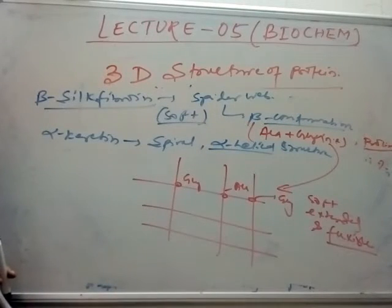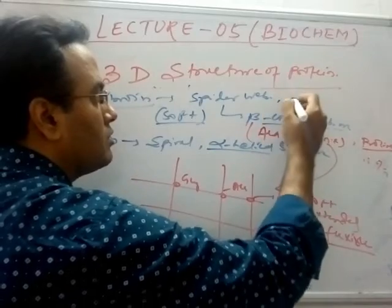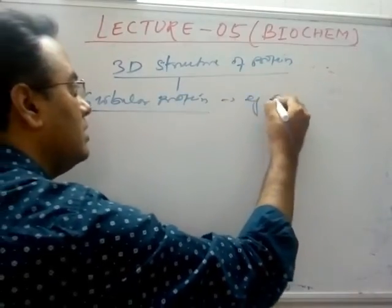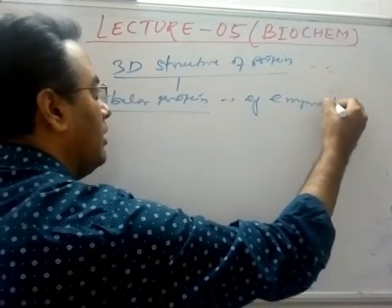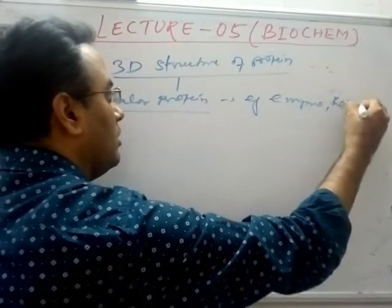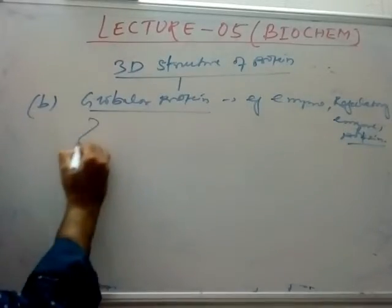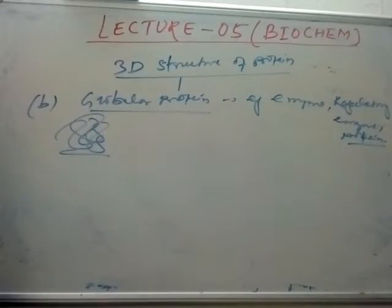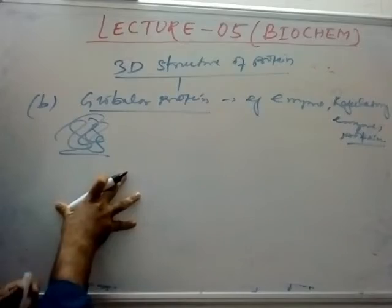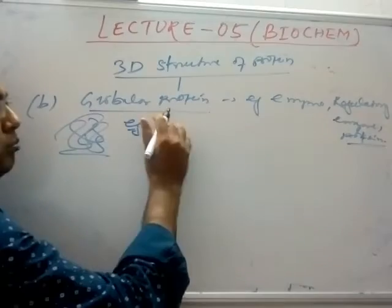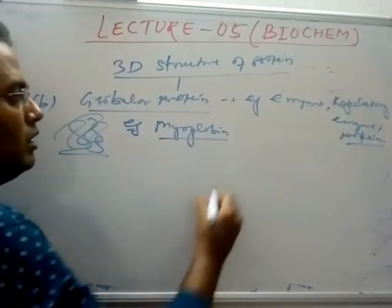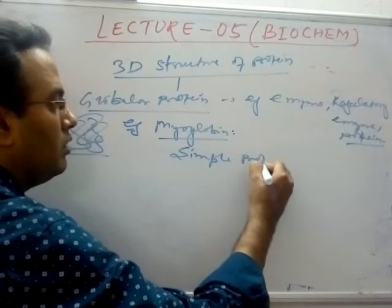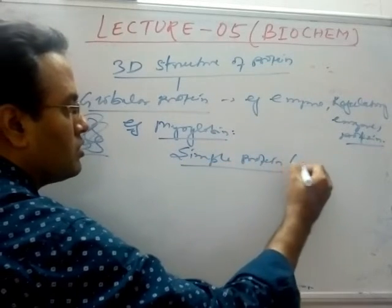Silk fibroin is soft, extended, and flexible; beta confirmation is a highly extendable form and is quite soft. Examples are spider web and silk. For globular proteins, the best examples are enzymes and regulatory proteins. The structure shape is very complex, which is why they are called globular — like a ball.